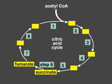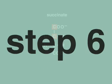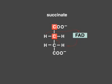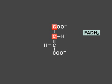In the next step, a molecule of FADH2 is produced. FADH2, like NADH, is an energy carrier that feeds high-energy electrons to the electron transport chain. In this reaction, succinate is converted to fumarate. Hydrogen atoms from succinate are stripped off and donated to FAD to produce FADH2.